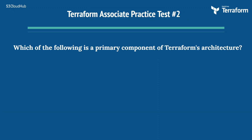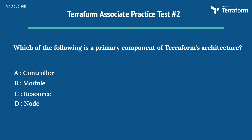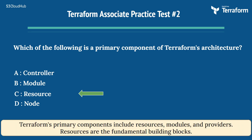Question 2: Which of the following is a primary component of Terraform's architecture? Options: A) Controller, B) Module, C) Resource, D) Node. The right answer is C) Resource. Terraform's primary components include resources, modules, and providers. Resources are the fundamental building blocks.